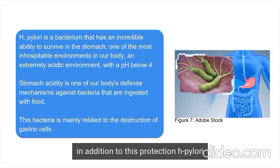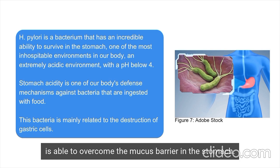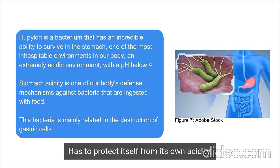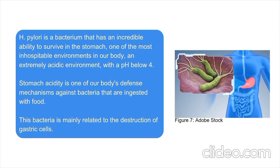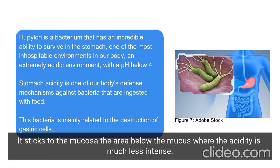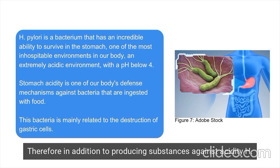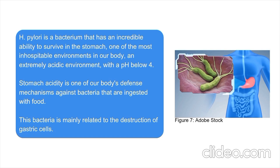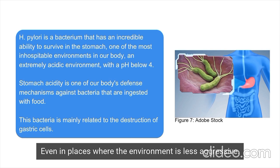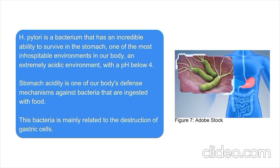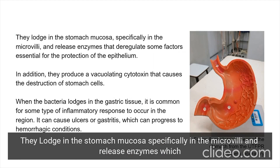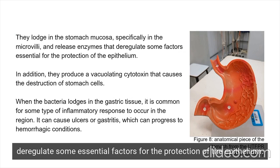In addition to this protection, H. pylori is able to overcome the mucus barrier in the stomach and protect itself from its own acidity. It sticks to the mucosa, the area below the mucus, where the acidity is much less intense. Therefore, in addition to producing substances against acidity, H. pylori is able to penetrate even in places where the environment is less aggressive. They lodge in the stomach mucosa, specifically in the microvilli, and release enzymes which deregulate some essential factors for the protection of the epithelium.